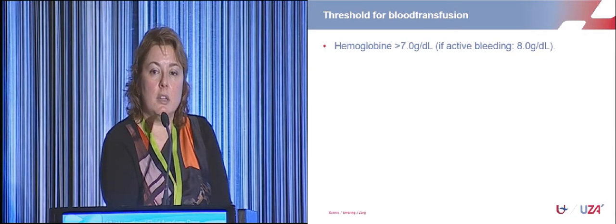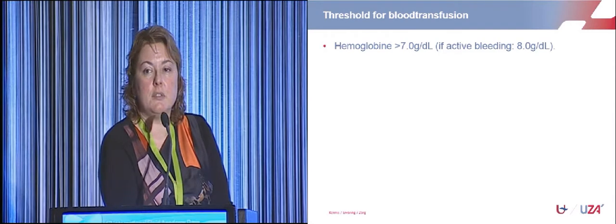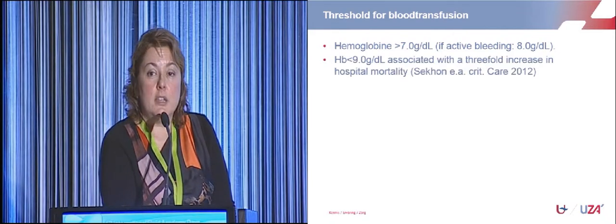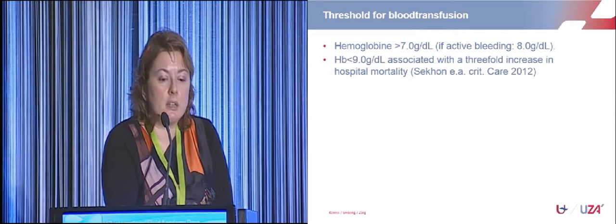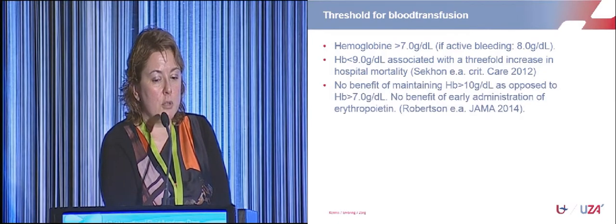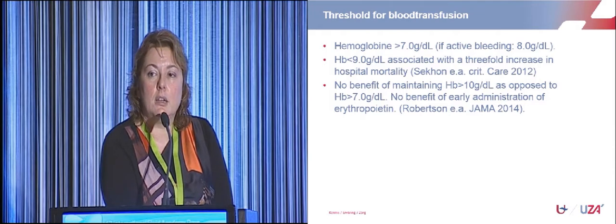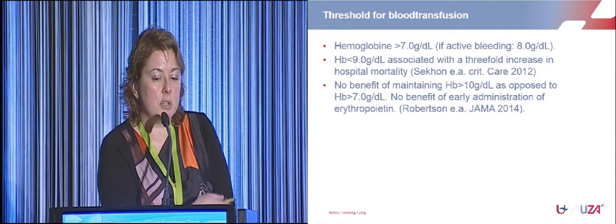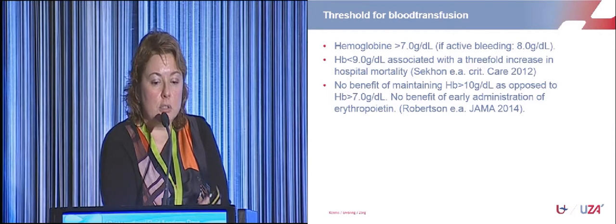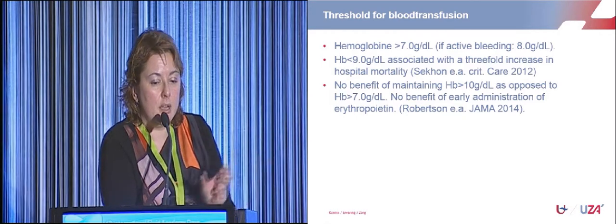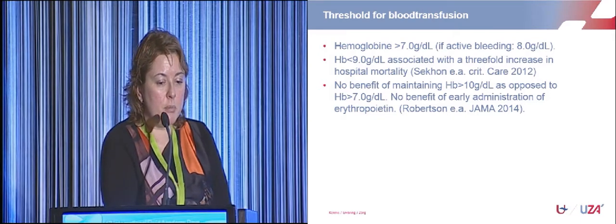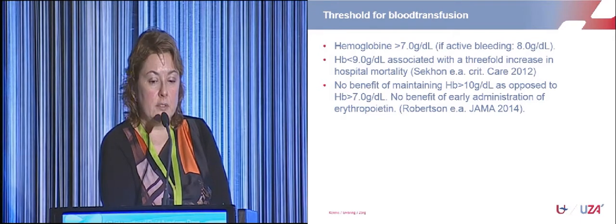For blood transfusion thresholds: maintain hemoglobin above 7, as in other critical care patients, and above 8 if actively bleeding. Hemoglobin below 9 is associated with a threefold increase in mortality. However, Robertson's 2014 JAMA study showed no benefit of maintaining hemoglobin above 10 compared to above 7, and erythropoietin also had no effect on outcome.